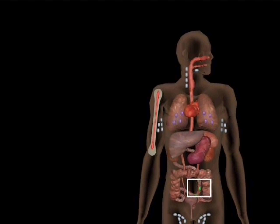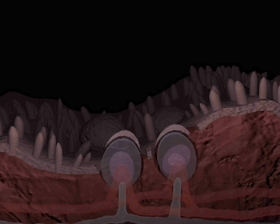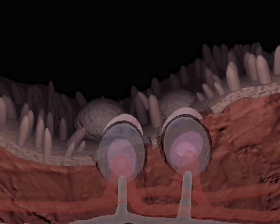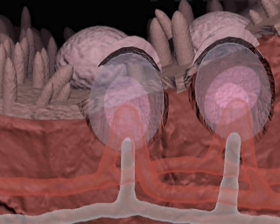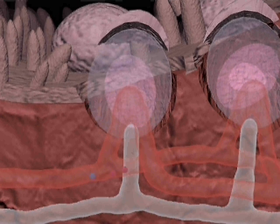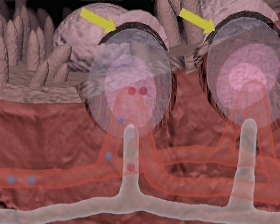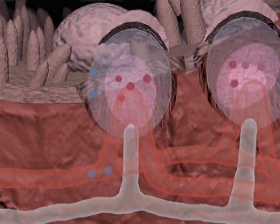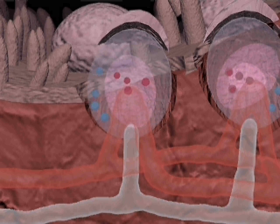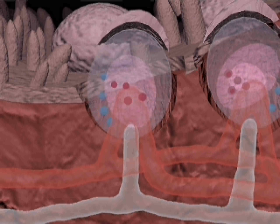Cells entering into the Peyer's patches do so through the high endothelial venules (HEVs). Lymphocytes drain out through the lymphatics to the local lymph nodes. Antigen comes from the lumen of the gut. A group of special cells across the top of the patch, called M-cells, take antigen from the gut and transport it across to the area where the lymphocytes can recognize it. If an immune response takes place, these lymphocytes will migrate to the infected area of mucosa.